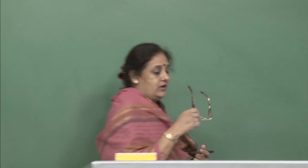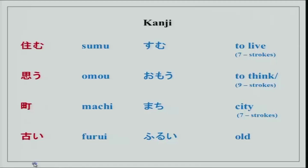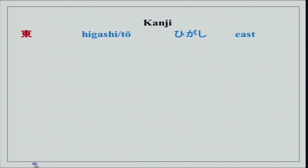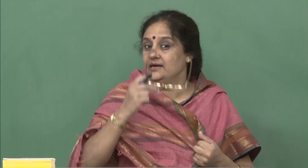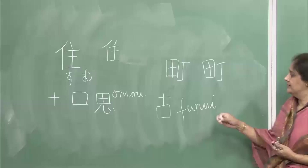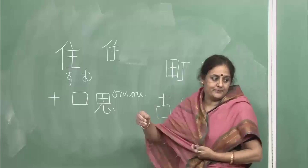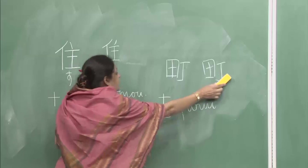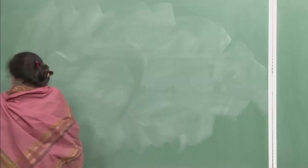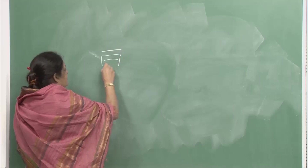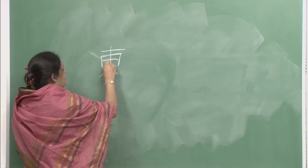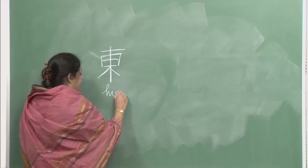We have done seasons earlier — haru, natsu, aki, fuyu. Today we will do directions: higashi (east), nishi (west), kita (north), and minami (south). Higashi is an 8-stroke character: 1, 2, 3, 4, 5, 6, 7, 8. Nishi is a 6-stroke character: 1, 2, 3, 4, 5, 6. This is higashi.